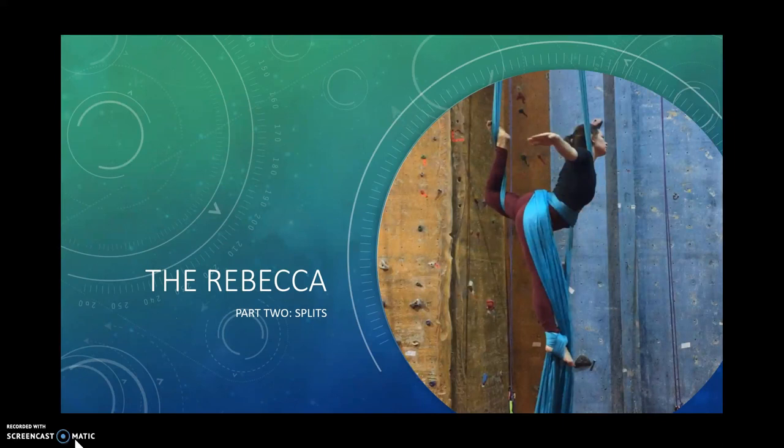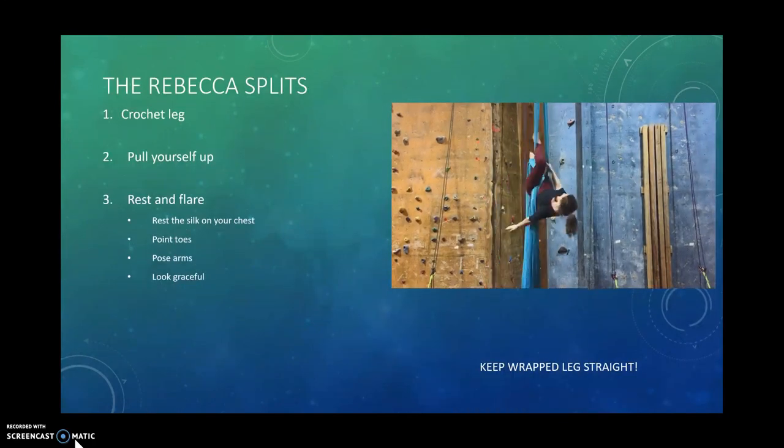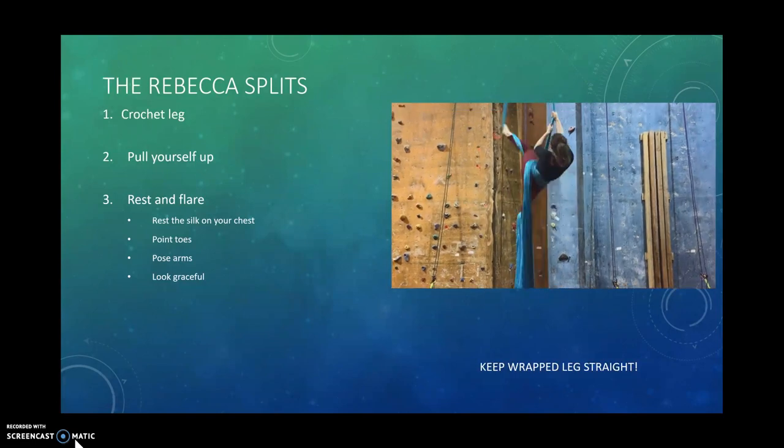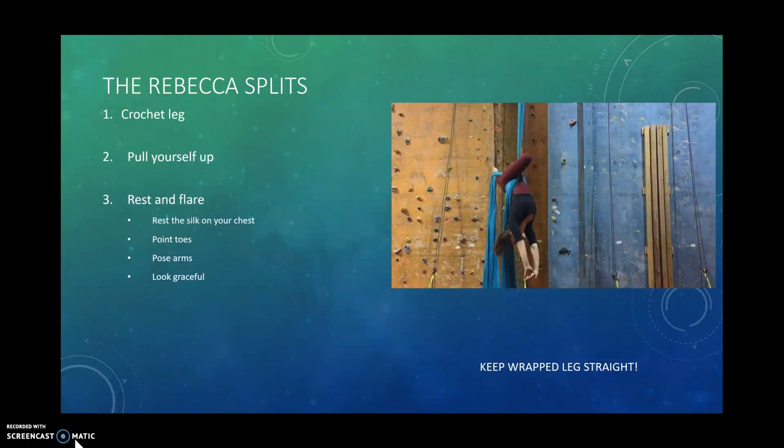Part 2 is the Rebecca Splits. For this, you're going to crochet your leg in the silk, pull yourself up, rest that silk up on your chest, and add some flare. Point your toes, pose your arms, and once again, look graceful.